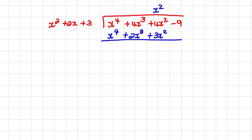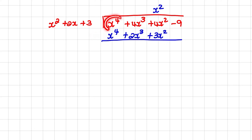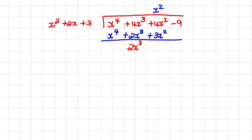And then we need to subtract this result from our original expression. So x to the power of 4 minus x to the power of 4 is 0. Then 4x cubed minus 2x cubed equals 2x cubed. And then 4x squared minus 3x squared equals x squared. And we simply bring down the 9 because we are subtracting 0.